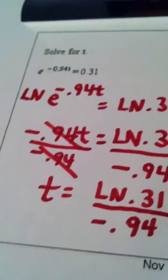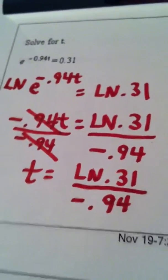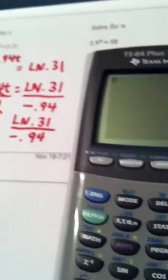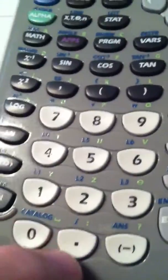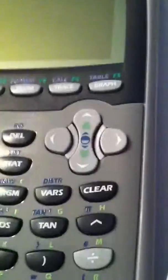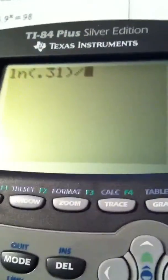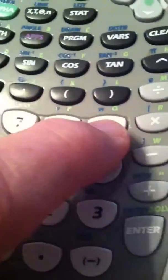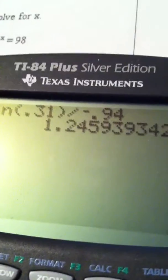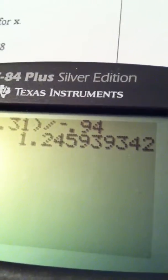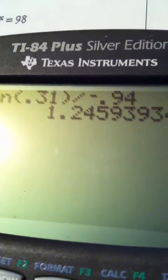Now if you were asked on an exam to approximate your answer, the way you would type this in is you would hit natural log of 0.31, close parentheses, hit divided by, and then the opposite of 0.94. And then we would hit enter here. And let's say they asked you to approximate it to the nearest thousandth. T would be approximately 1.246.